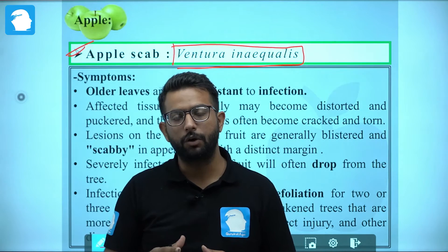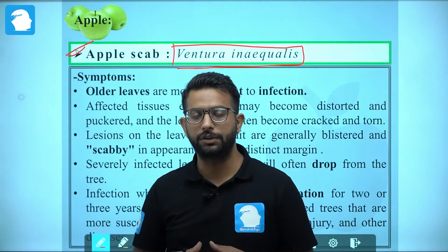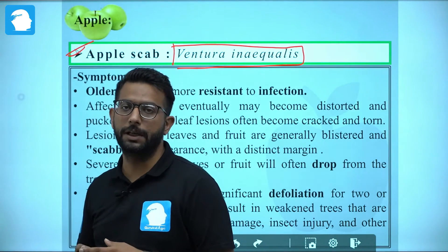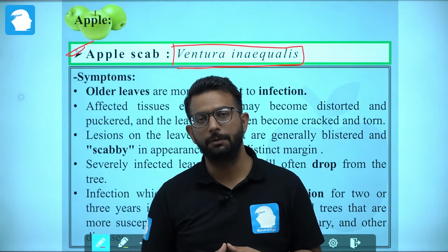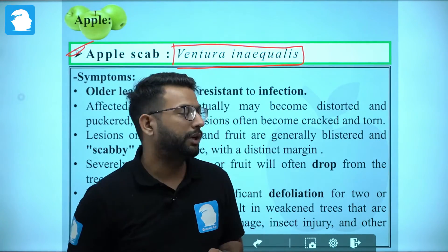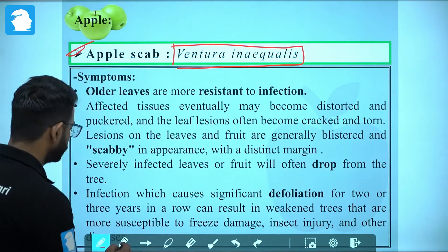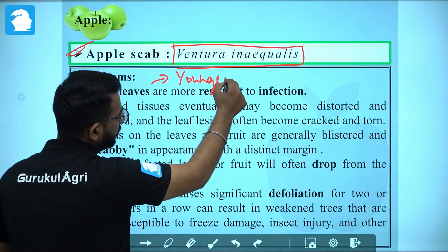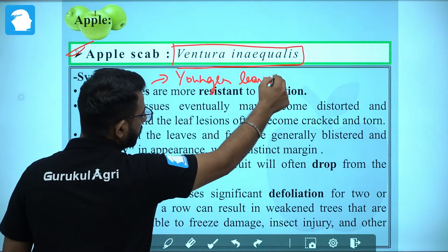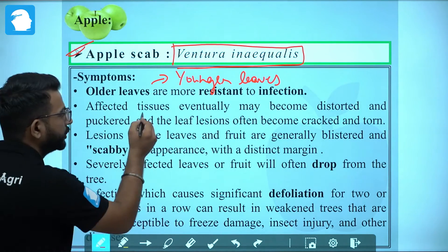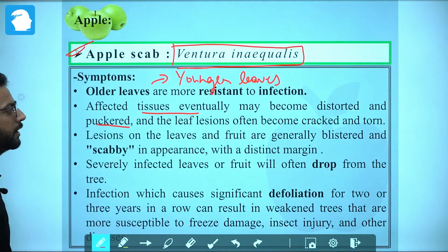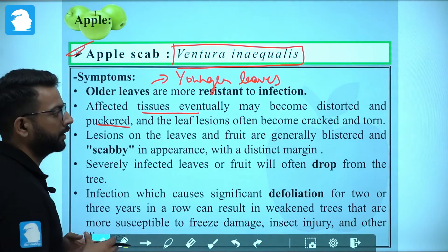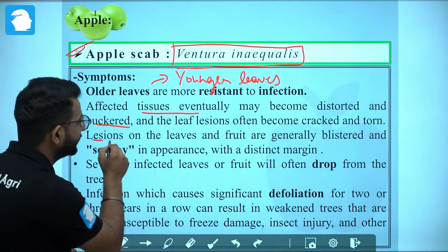The symptoms produced will be blisters or scabs on the leaf surface and on the fruit surface. Due to the scabby appearance there will be defoliation of the leaves, which will lead to weakening of the plant and make it more susceptible to other diseases and insect pests. Older leaves are more resistant to infection, meaning it will primarily affect younger leaves. Affected tissue will eventually become distorted and puckered, and the leaf lesions often become cracked and torn.